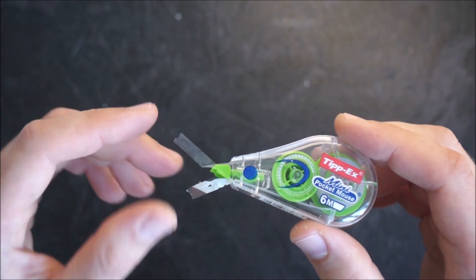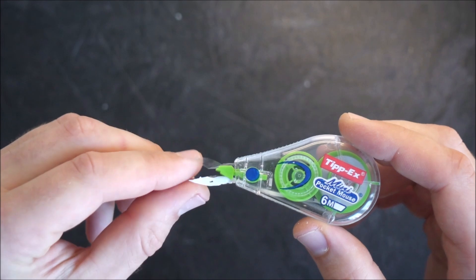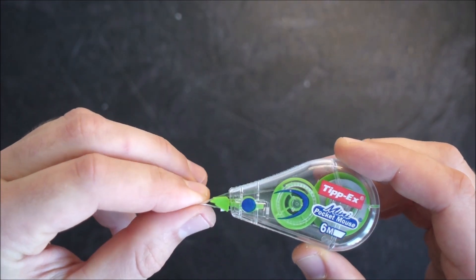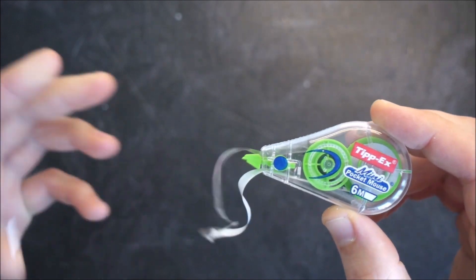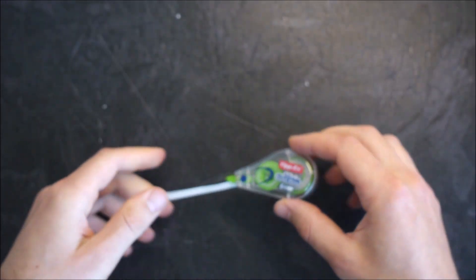The first thing we want to do is get a little bit of material to work with. Pull on both of these at the same time. You might have to fight it a little bit as it pulls against that wheel.